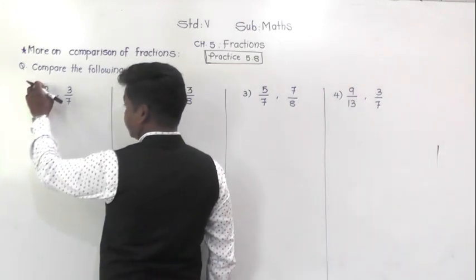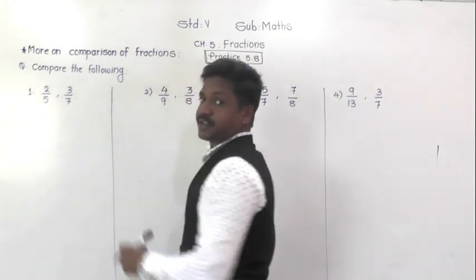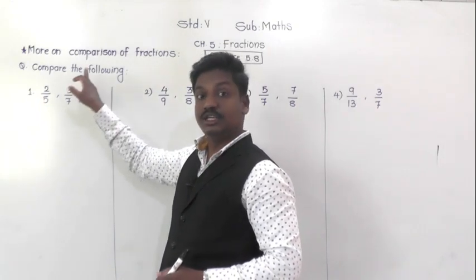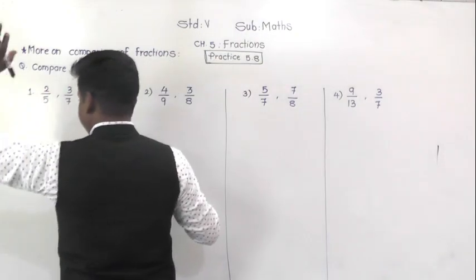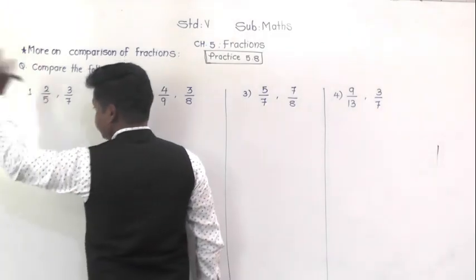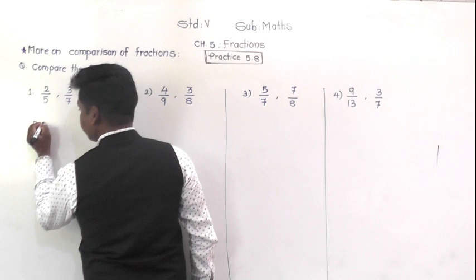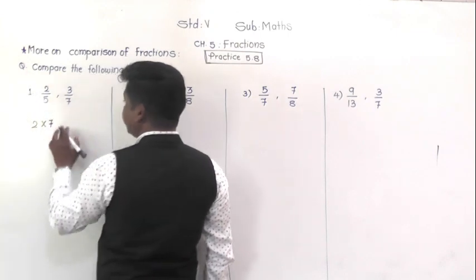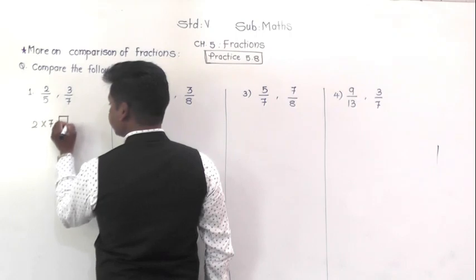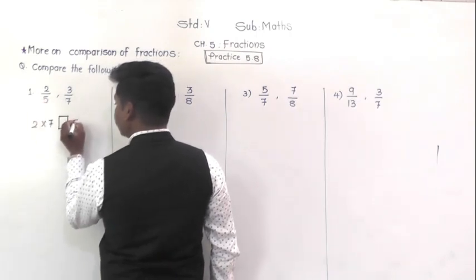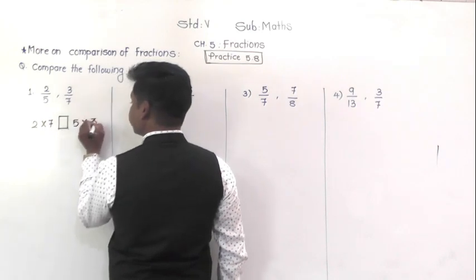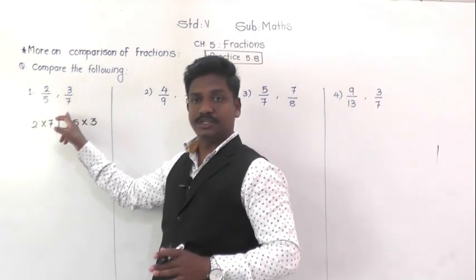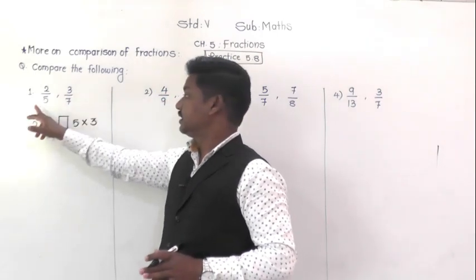Cross multiplication method: multiply the numerator of the first fraction with the denominator of the second fraction — this product goes on the left-hand side. Then multiply the denominator of the first fraction with the numerator of the second fraction — this product goes on the right-hand side. Then compare the two products.